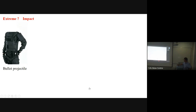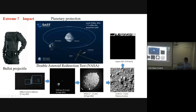One thing we did recently relates to the DART mission. The DART mission happened on 26 September 2022, organized by NASA. It launched a projectile that collided into a binary asteroid system. The objective was that with the collision, it would eject some mass, and as it ejects that mass, the orbital period — the orbital path — would change, preventing it from hitting Earth. That's something called planetary protection.